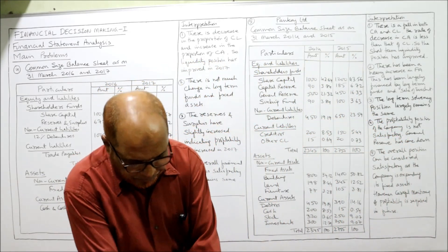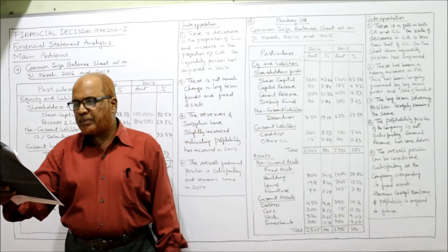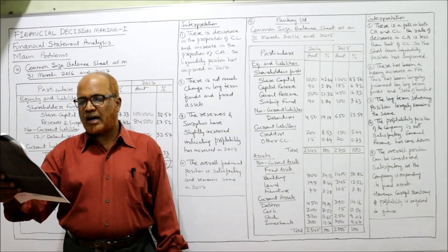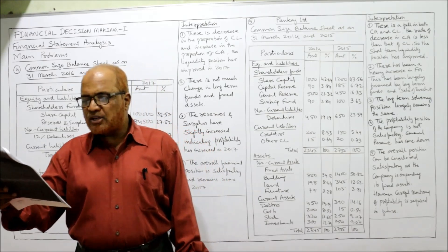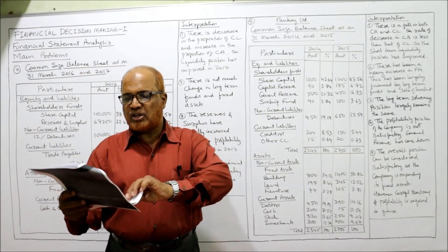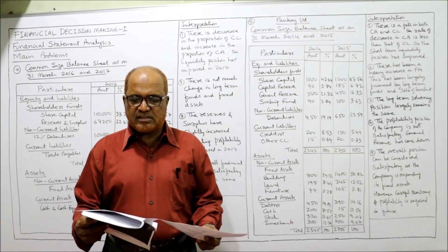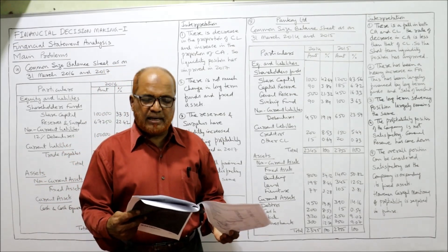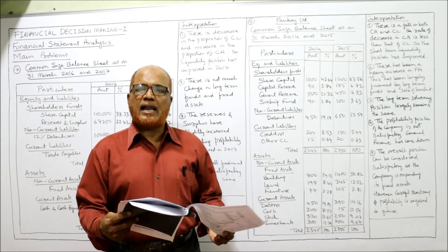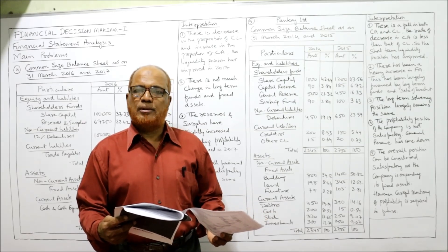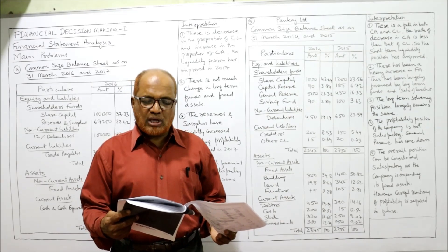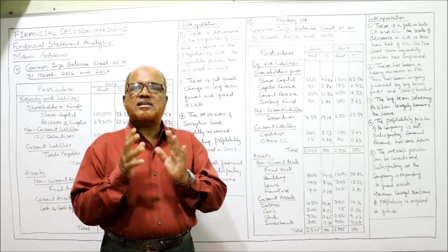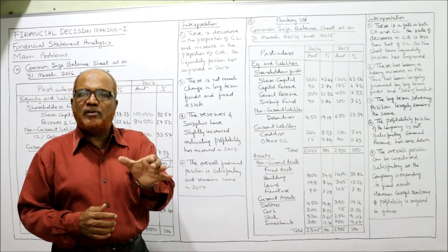Problem number five: the following balance sheet pertains to accounting records of Pankaj Limited as on 31st March 2014 and 2015. The balance sheet items include share capital, capital reserve, general reserve, sinking fund, debentures, creditors, and other liabilities on the liabilities side, and debtors, cash, stock, investment, building, land, and furniture on the asset side. You are required to arrange the above balance sheet in a form suitable for analysis and interpret the same. The balance sheet given is a horizontal type with liabilities on the left and assets on the right, but that method is not suitable for analysis — it must be converted into vertical format.